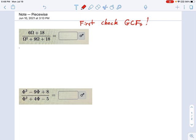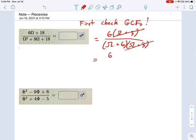And in this first one I can see that there is a greatest common factor there of 6, and that leaves behind omega plus 3. And on the bottom, if you factor this one, you'll see that's equal to omega plus 6 and omega plus 3. You can use the big X if you want to factor this one. And now I can see there's a common factor of omega plus 3, so that cancels out, and you just get 6 over omega plus 6.